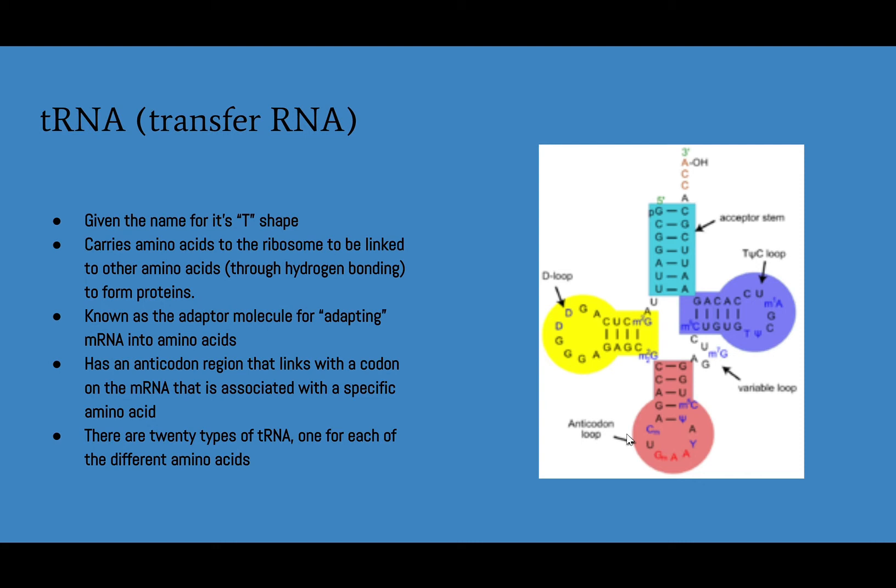tRNA is known as the adapter molecule for adapting mRNA into amino acids. It has an anticodon region on the bottom that links with a codon on the mRNA, and there are 20 different types of tRNA, one for each of the different amino acids.